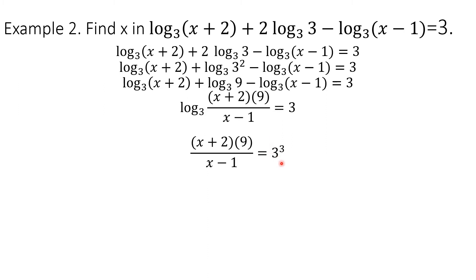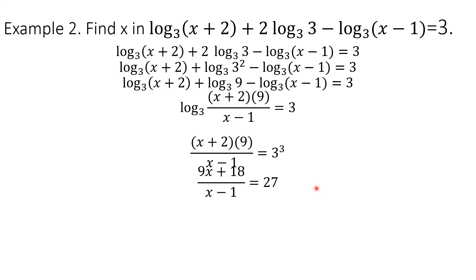3 cubed is 27. To simplify the numerator, we use the distributive property: 9 times x and 9 times 2. So we have 9x plus 18 over (x minus 1) equals 27. To solve for x, since we have a fraction, we use MPE — multiply both sides by (x minus 1). What remains is 9x plus 18 equals 27 times (x minus 1), which expands to 27x minus 27.